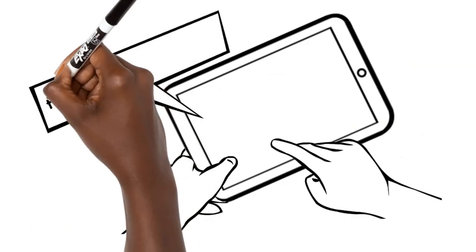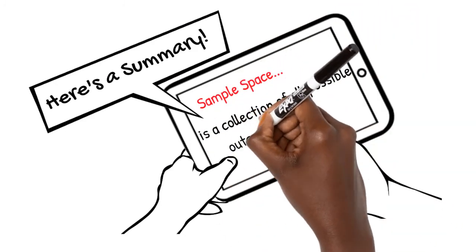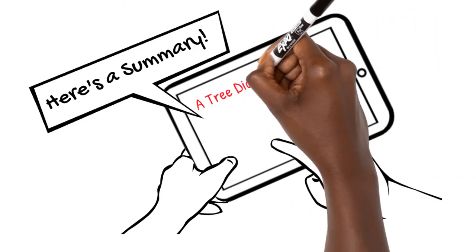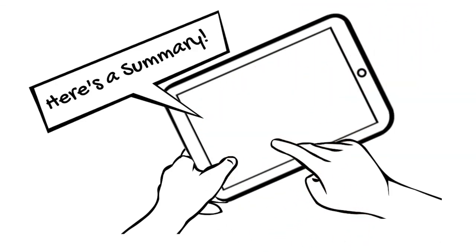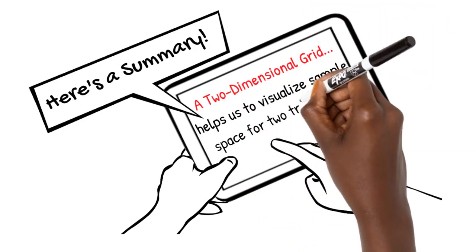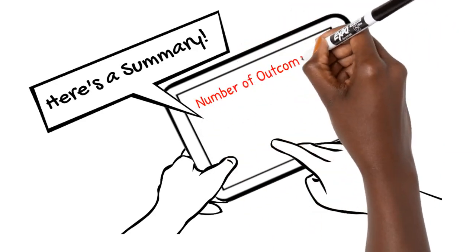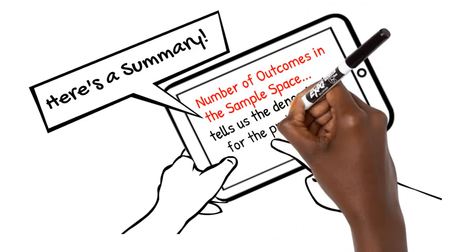Let's summarize what we've learned in this video. Sample space is a collection of all possible outcomes. A tree diagram helps us to visualize the sample space for multiple trials. A two-dimensional grid helps us to visualize sample space for two trials. Number of outcomes in a sample space tells us the denominator for probability.